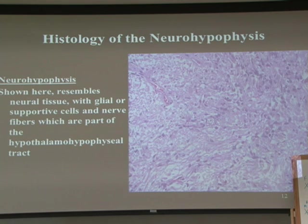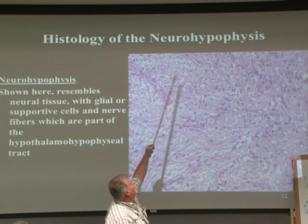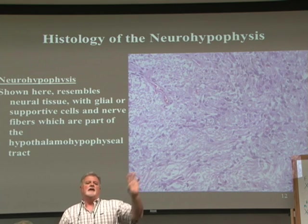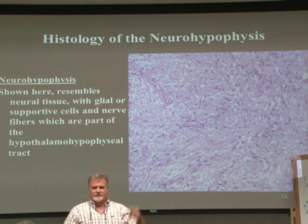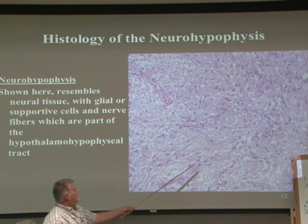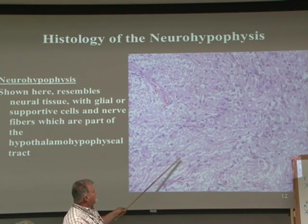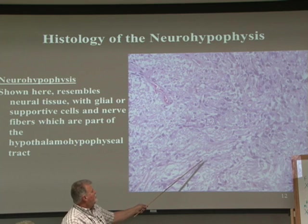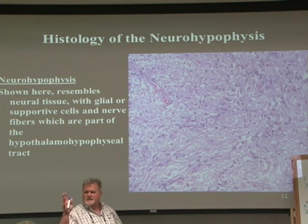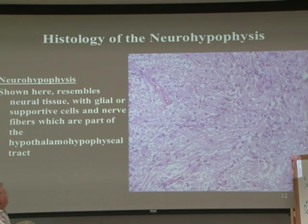The technical name for the posterior pituitary is the neurohypophysis, reminding us it develops as an outpocketing of the hypothalamus. Histologically, we see the axons of neurosecretory cells passing down into the posterior pituitary, along with supportive cells similar to astrocytes called pituitocytes. In lab, we should be able to see both of those.